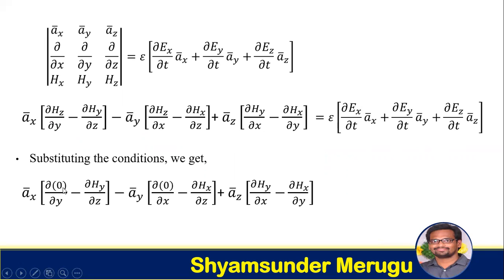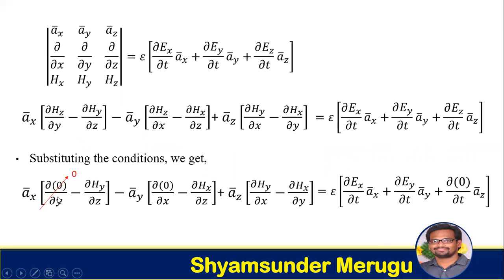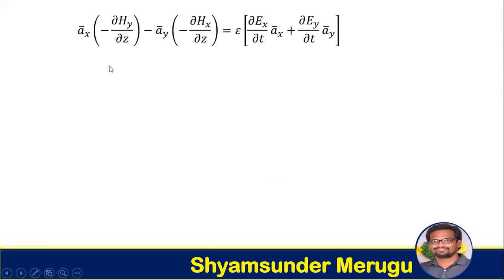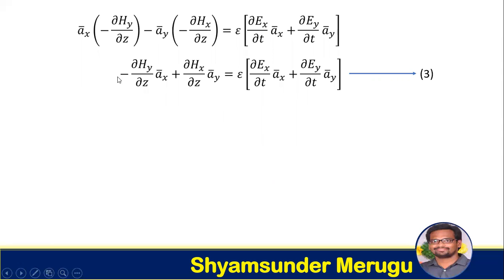Now substituting the conditions — Hz equals zero and Ez equals zero — several terms vanish: the y component of the magnetic field with respect to x is zero, and the x component of the magnetic field with respect to y is zero. The simplified expression we obtain is: ax bar of (minus partial Hy over partial z) plus ay bar of (partial Hx over partial z) equals epsilon times (partial Ex over partial t ax bar plus partial Ey over partial t ay bar). We treat this as equation 3.